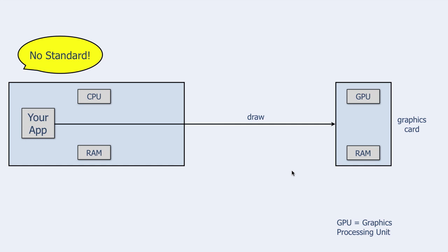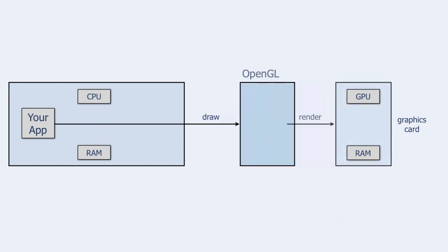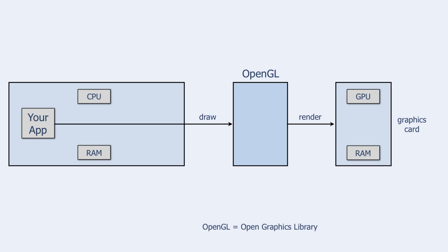To solve that problem, Silicon Graphics introduced OpenGL. OpenGL stands for Open Graphics Library and consists of a library of several hundred standardized low-level functions. Now each manufacturer had to obey OpenGL, and your application had to call the low-level functions of OpenGL. The benefit was that your application worked on all graphics cards — a real revolution for game programmers, who could now write games with fast and beautiful graphics.